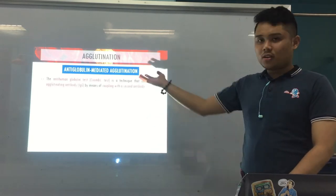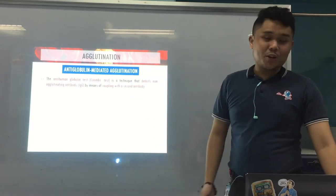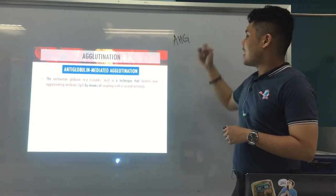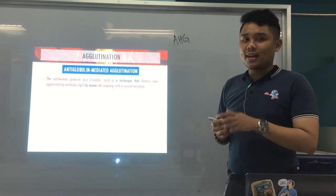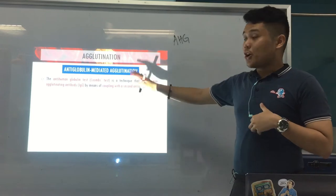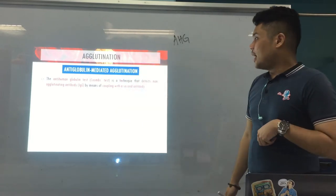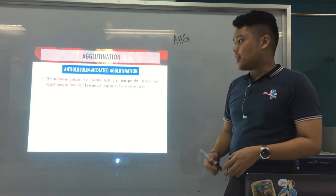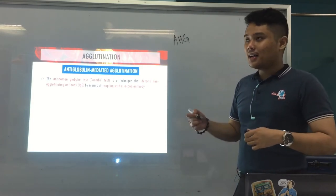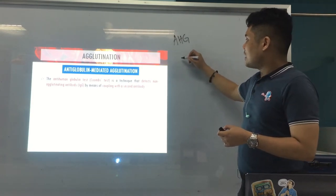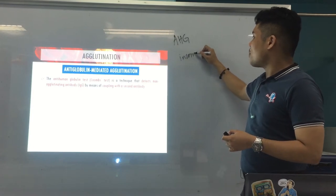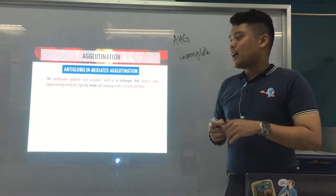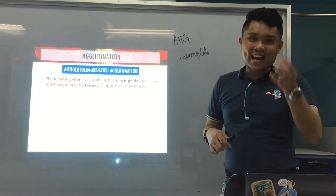This test — your anti-human globulin test, or AHG, also called the Coombs test — detects a non-agglutinating antibody, or according to Blood Bank, an incomplete antibody. It is usually IgG, detected by means of coupling with a second antibody.